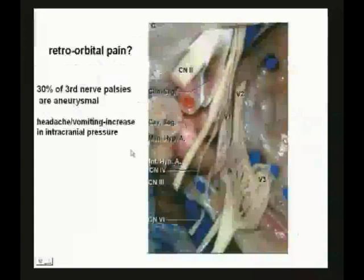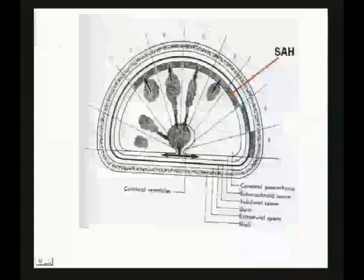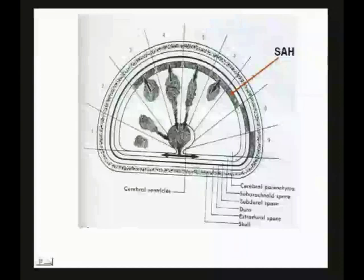About subarachnoid hemorrhage: here's the subarachnoid space. When you have a berry aneurysm, you can have bleeding into the subarachnoid space. It can stay in the subarachnoid space, penetrate the parenchyma of the brain, or go down into the ventricles. Alternatively, a parenchymal hemorrhage can work its way into the subarachnoid space and ventricles. All these things can happen with subarachnoid hemorrhage.